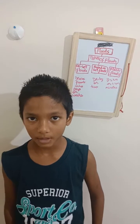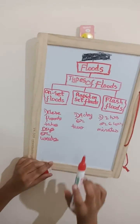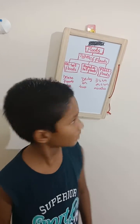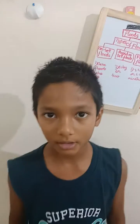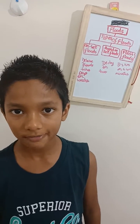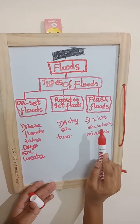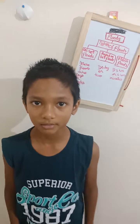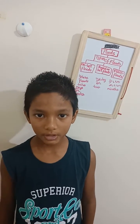Floods are divided into three main parts. First, slow onset floods — these floods take days or sometimes weeks. Second, rapid onset floods — these take a day or two. Now comes the most dangerous: flash floods. These floods take only two to six hours, or sometimes just minutes.